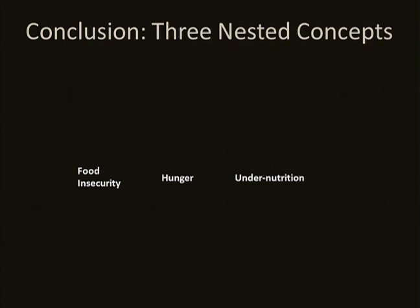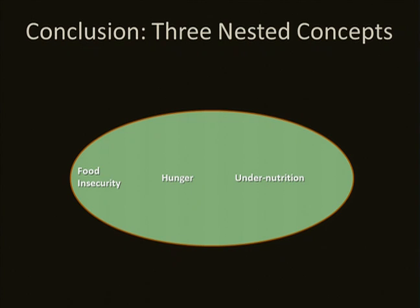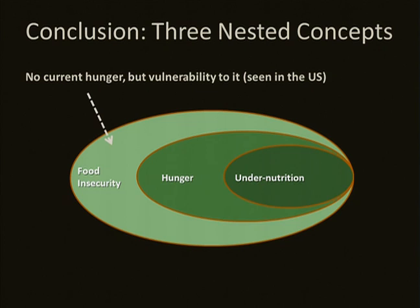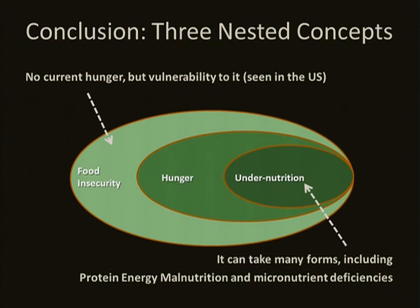I want you to remember the three nested concepts because we're going to keep coming back to this throughout the lecture today. We have food insecurity, hunger, and undernutrition. When we look at these three concepts together, it's important to note that although food insecurity means no current hunger but a vulnerability to it, we see a lot of food insecurity in the United States. But when we get to the more severe cases of undernutrition, that's when you start to see protein energy malnutrition and also the micronutrient deficiencies that Professor Kutz talked about in the last lecture.